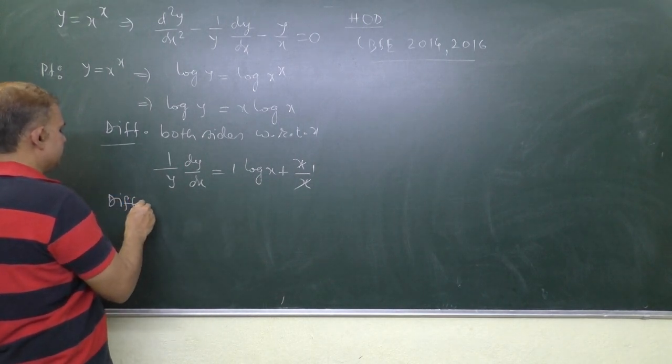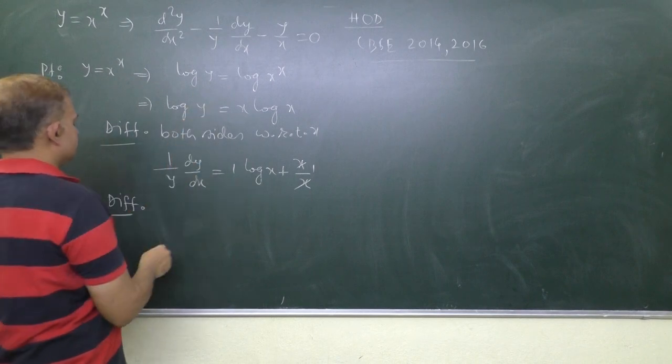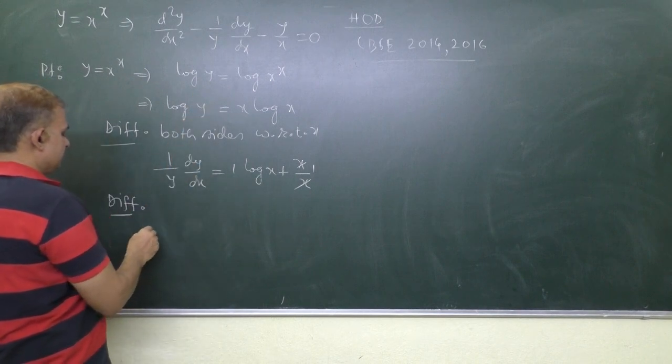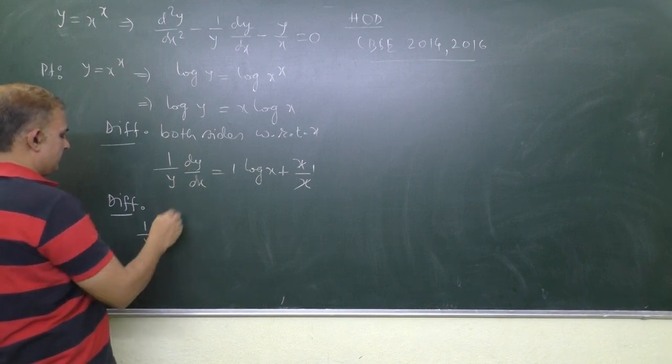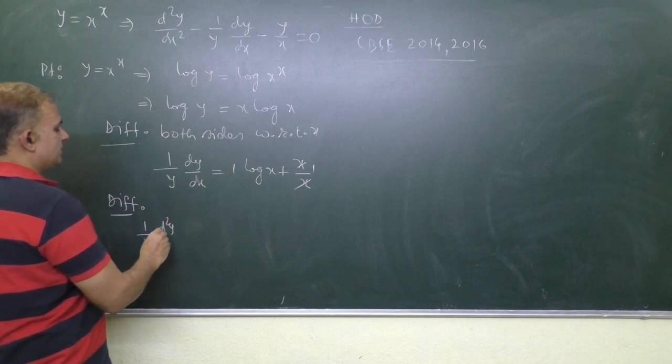So let's differentiate this. Differentiation of this using product rule: 1 by y constant, derivative of dy by dx is d2y by dx square.